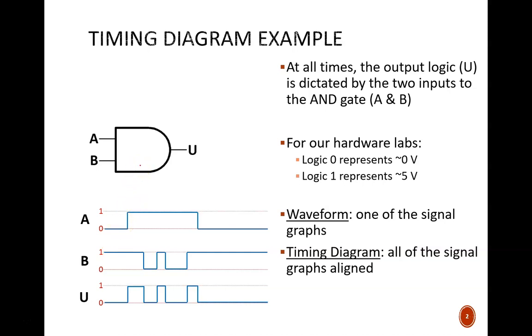Therefore, we can see that in time slots where both A and B are high, then U is high. If any one of the inputs is low, then the output is low.